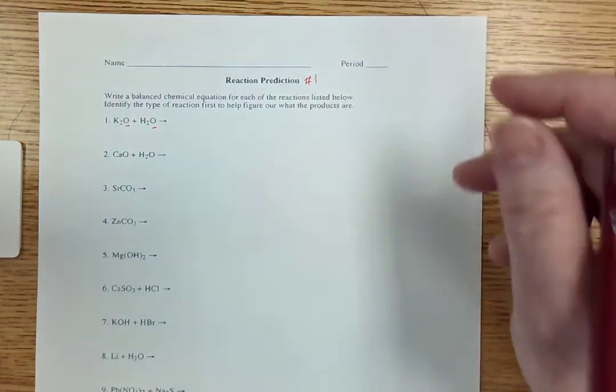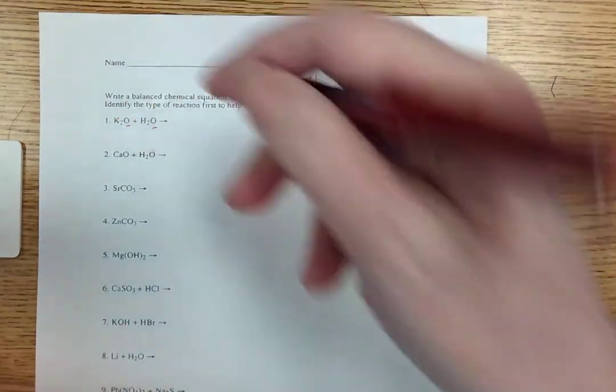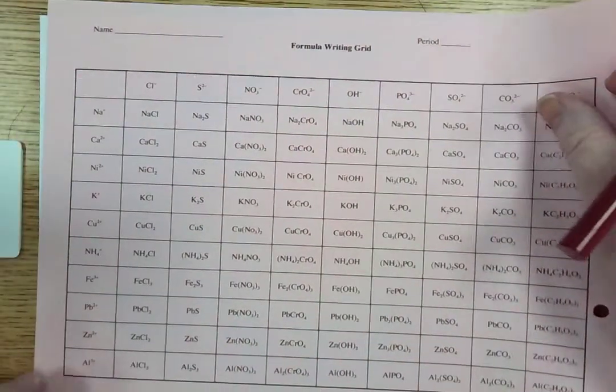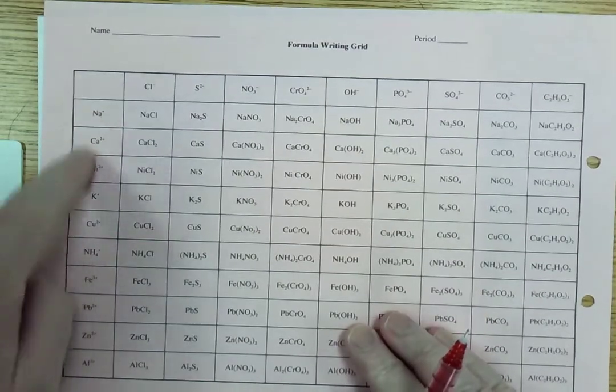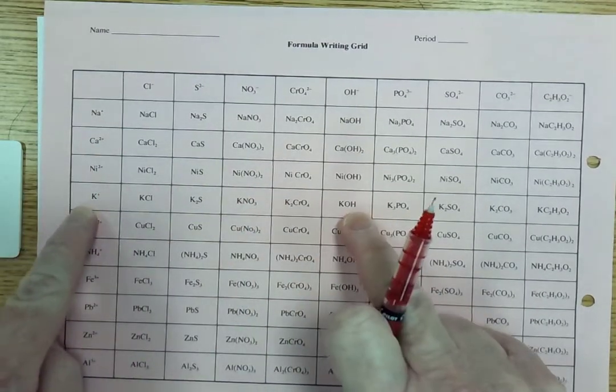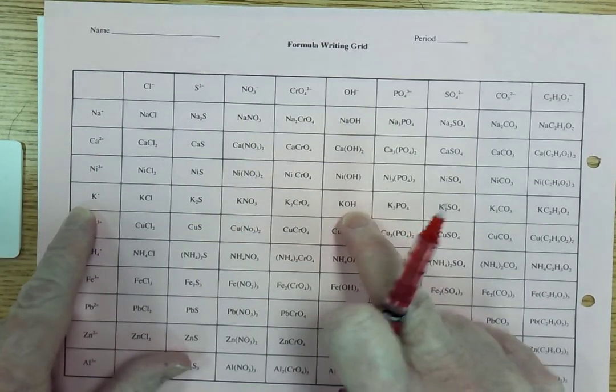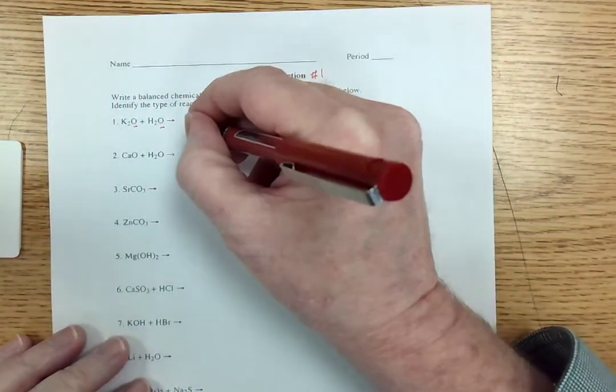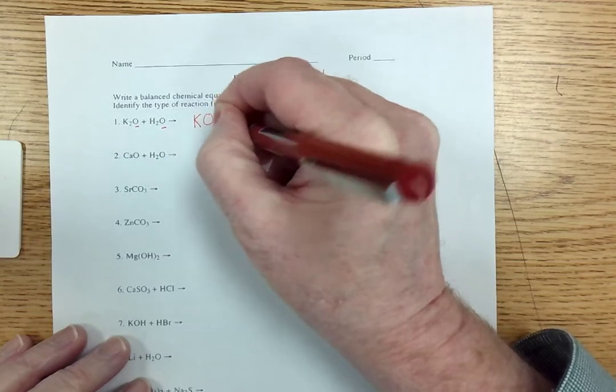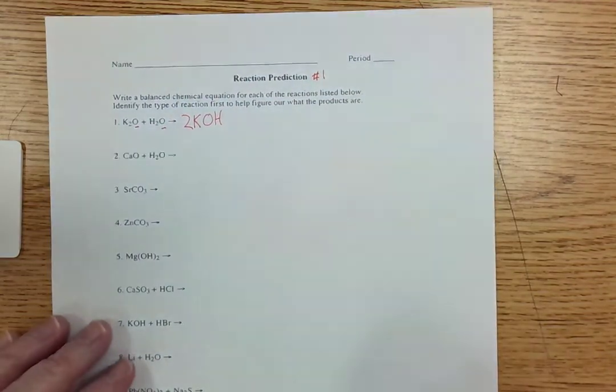So what I'm going to do is know that K is hooked up with hydroxide. So I pull out my formula writing grid. I find potassium. I work my way over here. KOH is the product. And to balance it, I'm going to need a two in front.